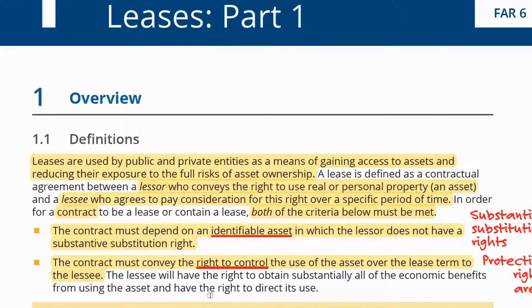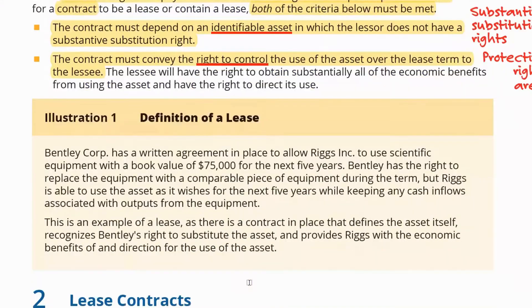It's not a lease agreement if you, as the client, are not controlling this property. So look at this illustration about the definition of lease: Bentley Corporation has a written agreement in place to allow Riggs, Inc. to use scientific equipment with a book value of $75,000 for the next five years.